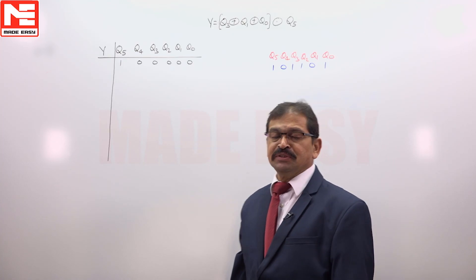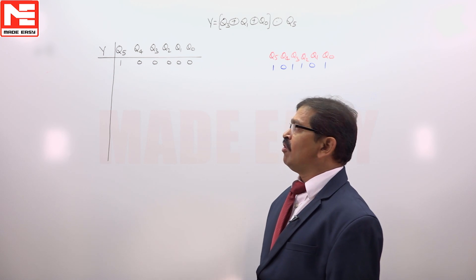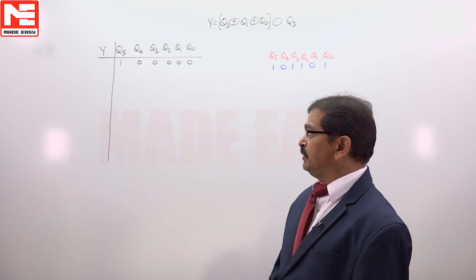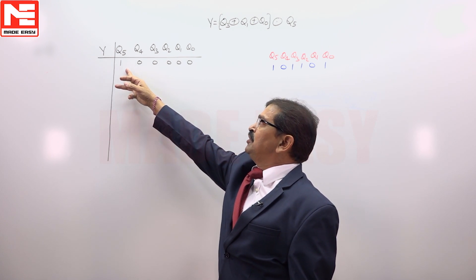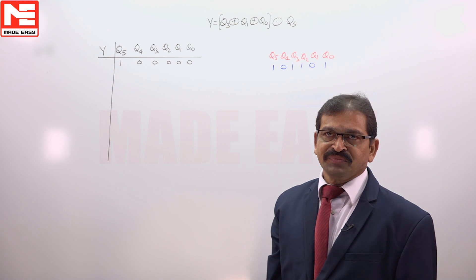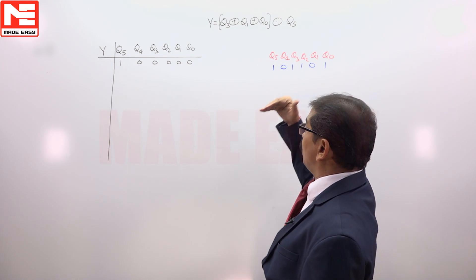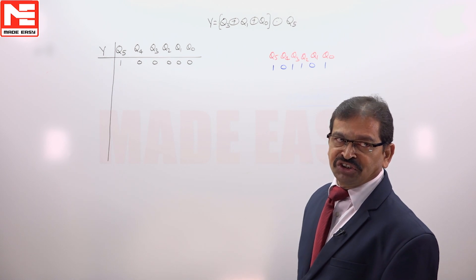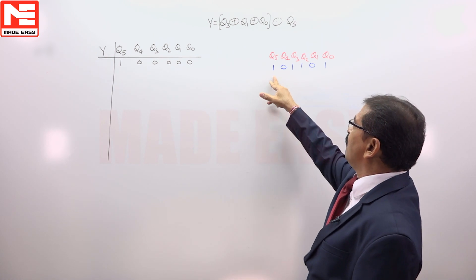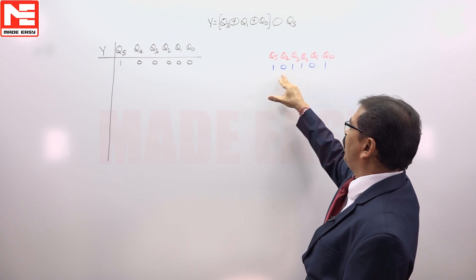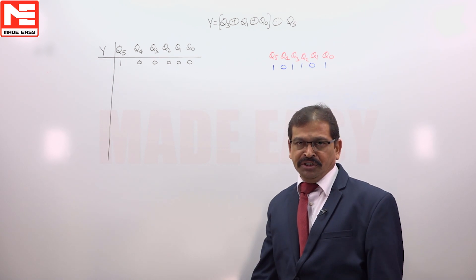We are looking at a 6-bit right shift register in the given problem. The initial content of the 6-bit right shift register is Q5=1 and the remaining all bits are 0s. It is asked after a minimum how many number of clock pulses this 6-bit register content comes to be 101101 at Q5, Q4, Q3, Q2, Q1, Q0 respectively.